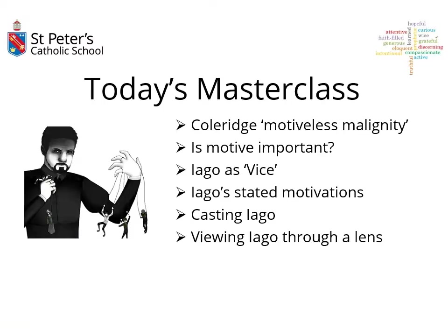Today we're going to look at Coleridge, who coined the phrase 'motiveless malignity' and what may have been meant by that. We're going to look at the concept of motive, Iago as a vice character, Iago's motivations, what it actually means to cast Iago and how that might impact things, and thinking about how we view Iago in a certain way.